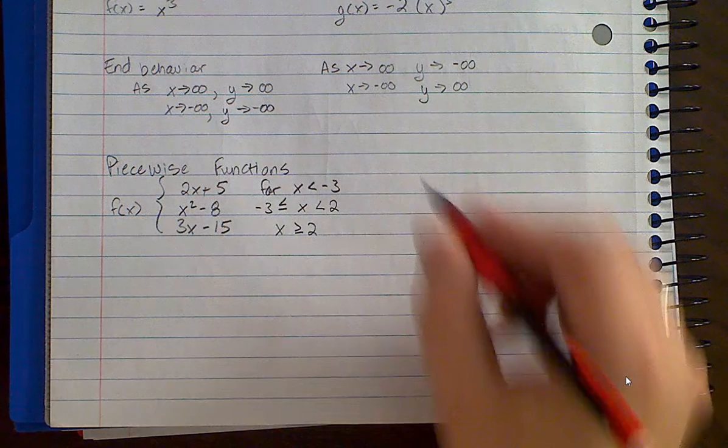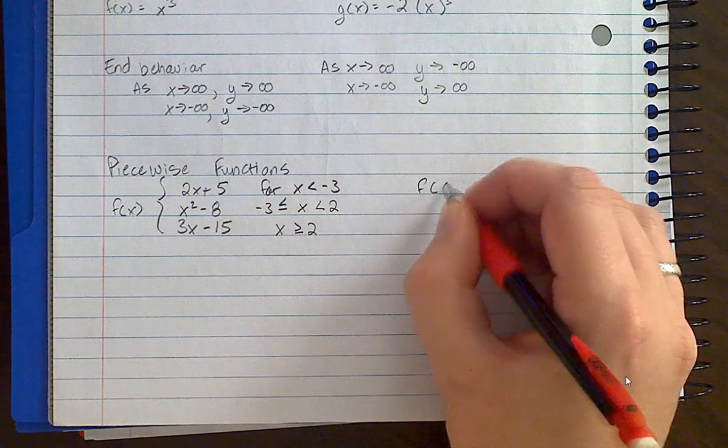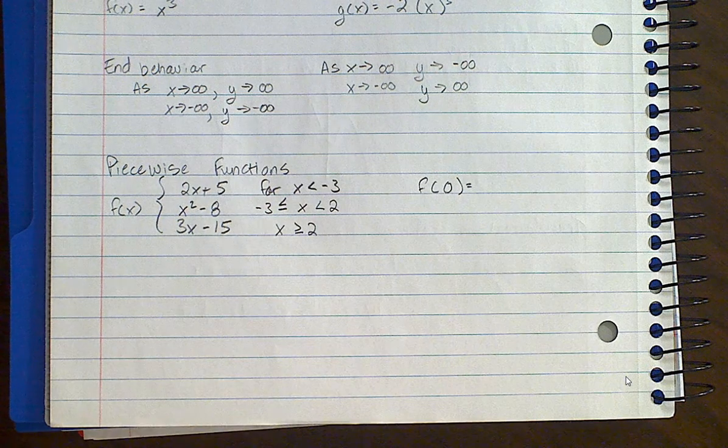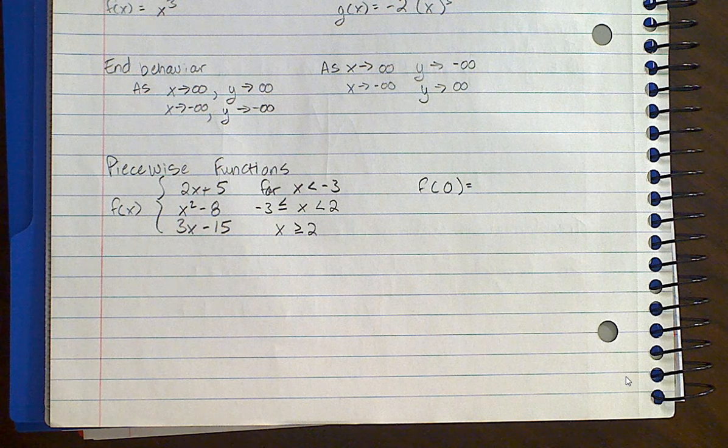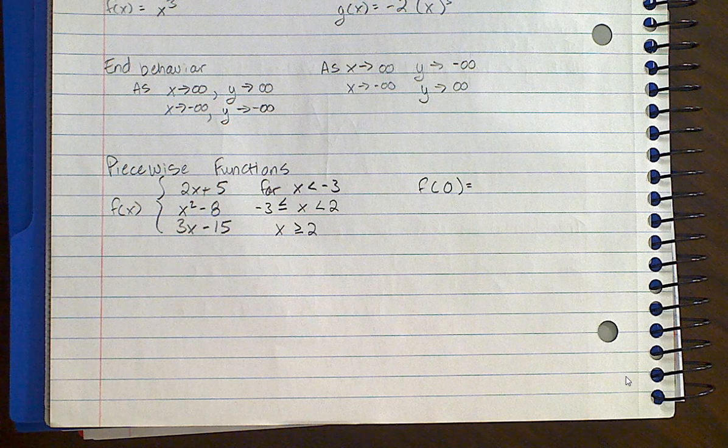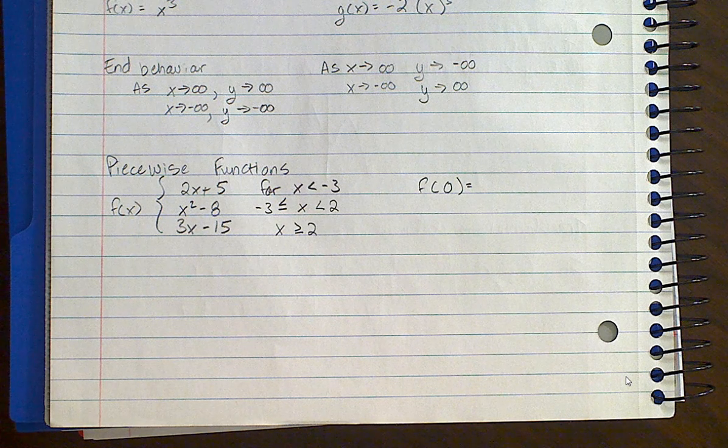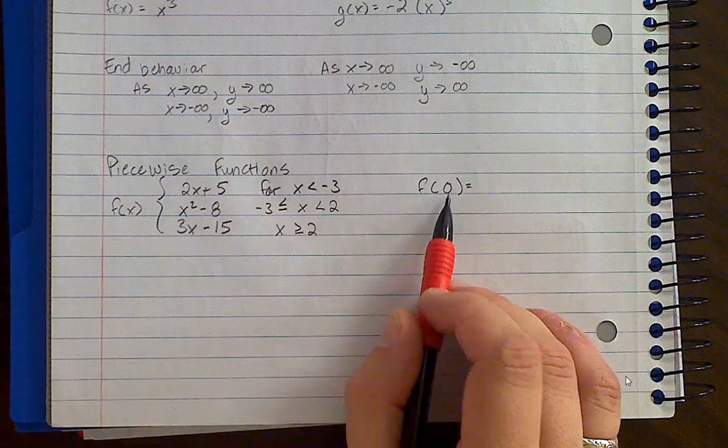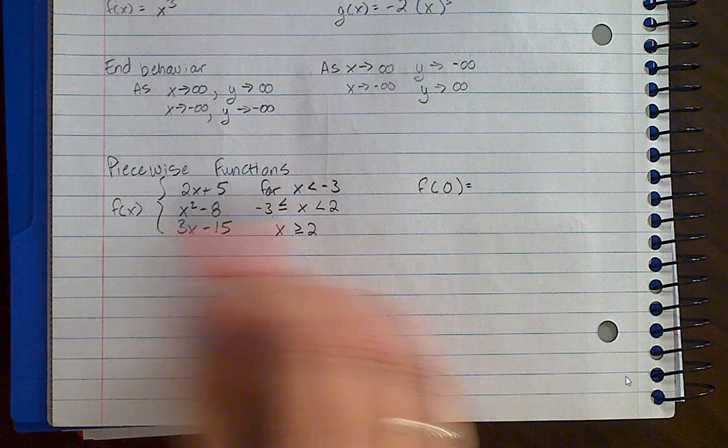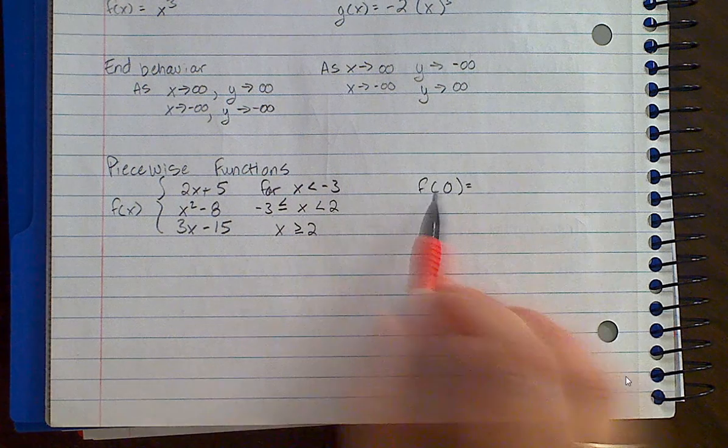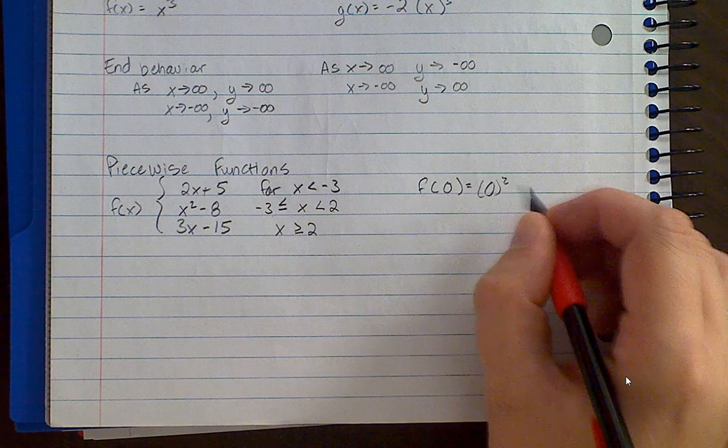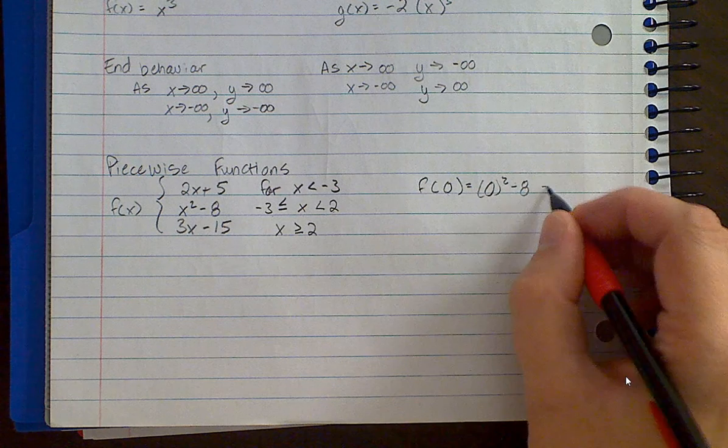So for example, if I ask you to evaluate the function at f of 0. So f of 0, which of those intervals does that fall in? Is it less than negative 3? Is it between negative 3 and 2? Or is it greater than 2? Between negative 3 and 2, right? So since 0 is in between these two numbers, I am only going to use the middle function. I don't care about the top or the bottom. And so to evaluate f of 0 then, I would just plug 0 in for x in the middle function. So 0 squared minus 8. So f of 0 is negative 8.